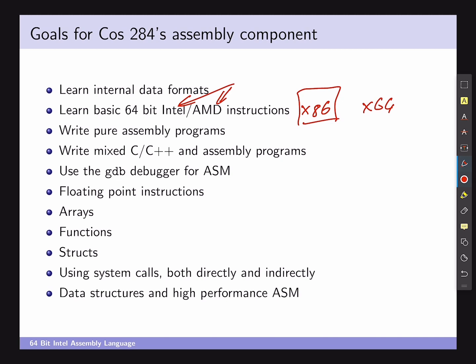Another goal is to write pure assembler programs — from start to end, everything in x86 assembler. A fair amount of the early material focuses on that, but later we'll do something I find very practically relevant: mixing C and C++ programming with assembler. In general you wouldn't implement a full system in assembler; you'd rather implement a computationally heavy section where you want extra performance. It's unlikely you'd build a full enterprise system in assembler in the modern era. In early computer systems full programs were written in assembler, but now you'd only implement a subset.